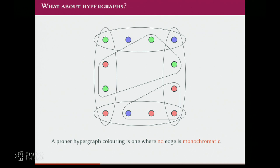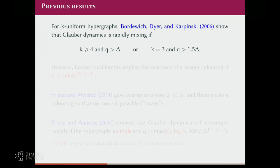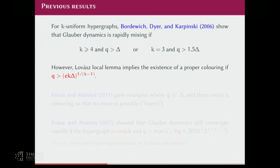What about hypergraph colorings? This also got started. You can do Markov chain, path coupling, etc. Dyer and Karpinski, more than 10 years ago, showed that Glauber dynamics is again rapidly mixing if I have a K-uniform hypergraph with K at least 4 and Q larger than delta, or K equals 3 and Q larger than 1.5 delta. It seems a lot better than graph colorings because we get constant 1 for most cases. However, although it looks better, it's actually much worse — because we know if you apply the Lovász Local Lemma, the existence of a proper coloring is guaranteed as long as Q is at least roughly delta to the 1/(K-1). So even if Q is much less than delta, there still exists a proper coloring. So delta cannot be the right answer.